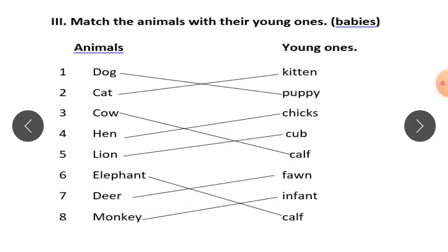Children. The young one of lion is called cub. The young one of hen is called chicks. That's the question frame.